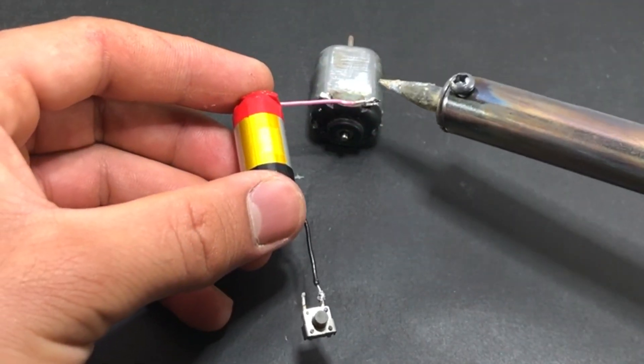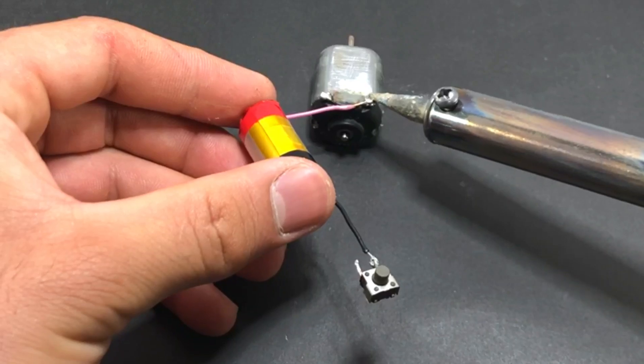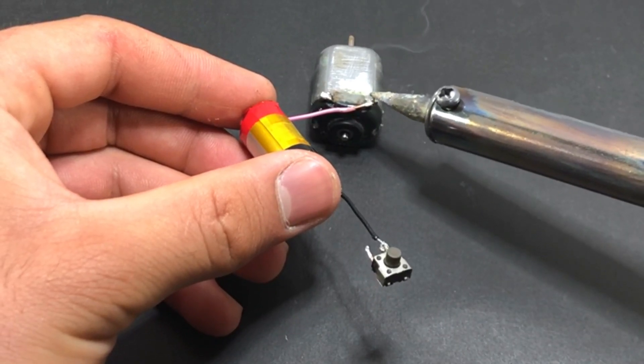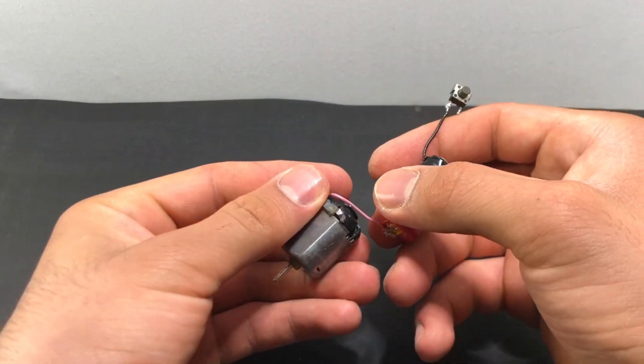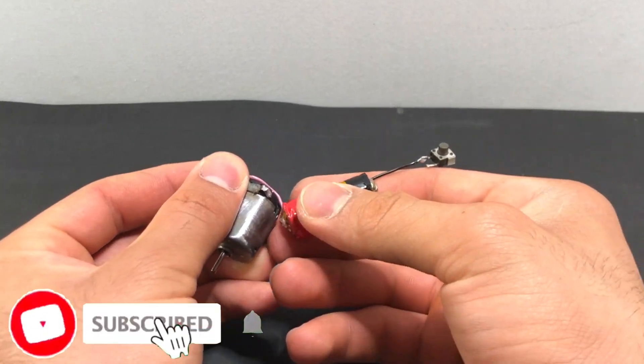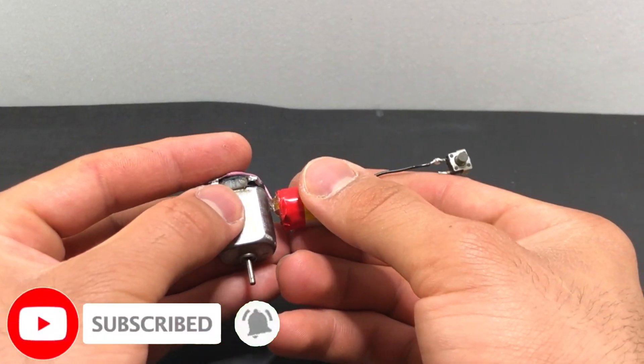In this step we connect the positive part of the battery to the DC motor. In this part we condition the wire. Thank you for subscribing to the channel and supporting me.